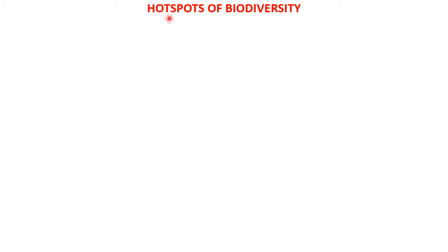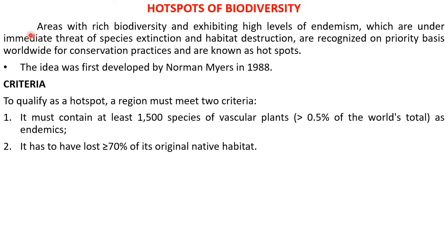Hi everyone, today's topic is the hotspot of biodiversity. What is a hotspot? The hotspot is a particular area or region. Areas with rich biodiversity and exhibiting high levels of endemism, which are under immediate threat of species extinction and habitat destruction, are recognized on a priority basis worldwide for conservation practices and are known as a hotspot.